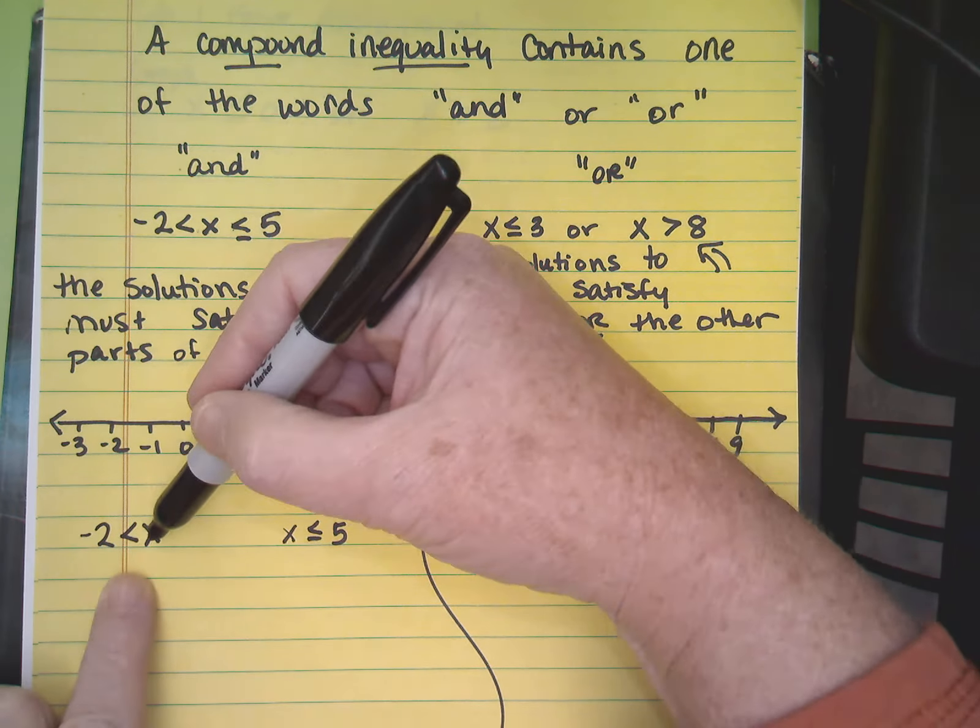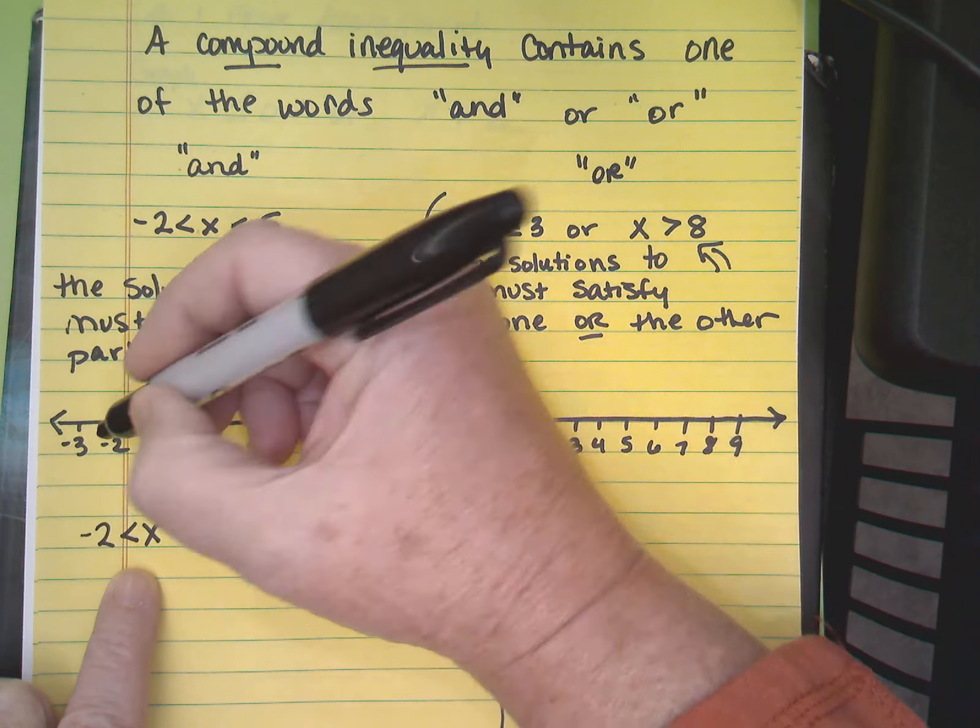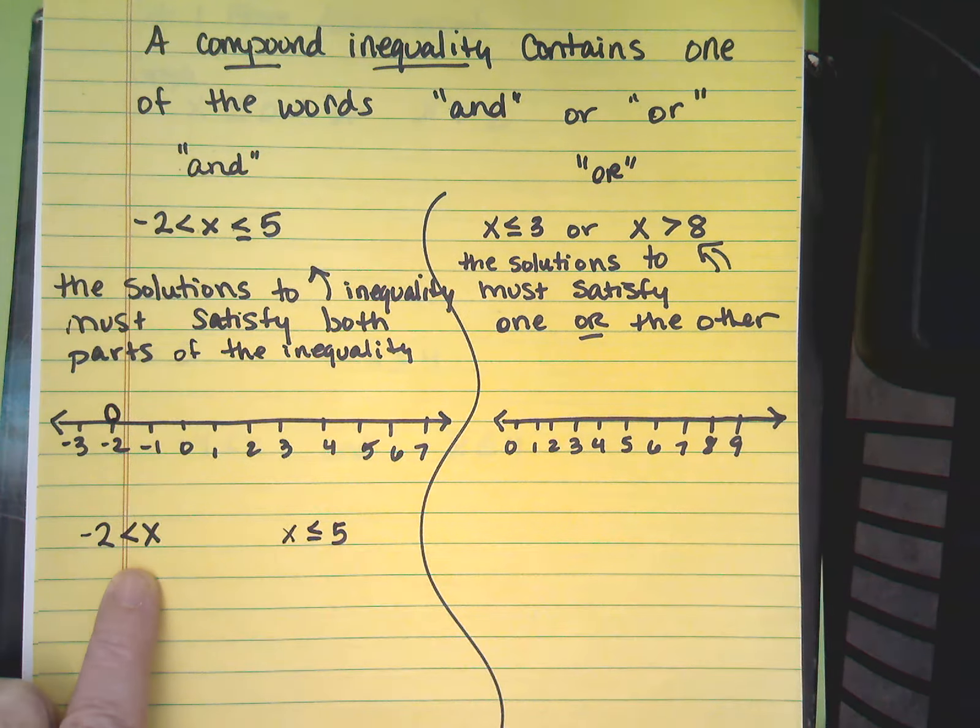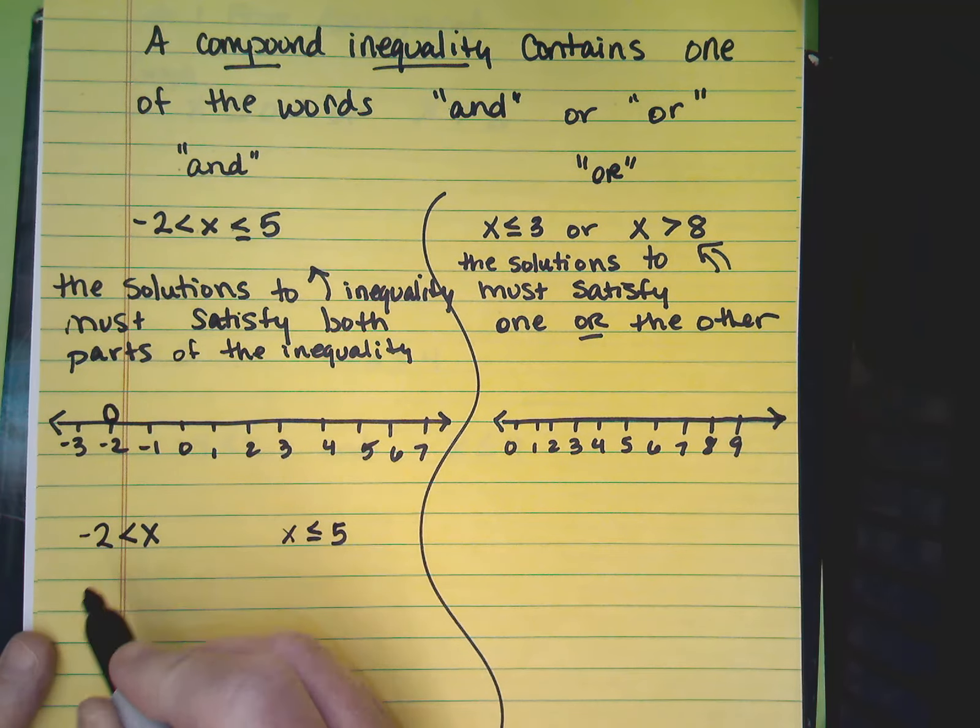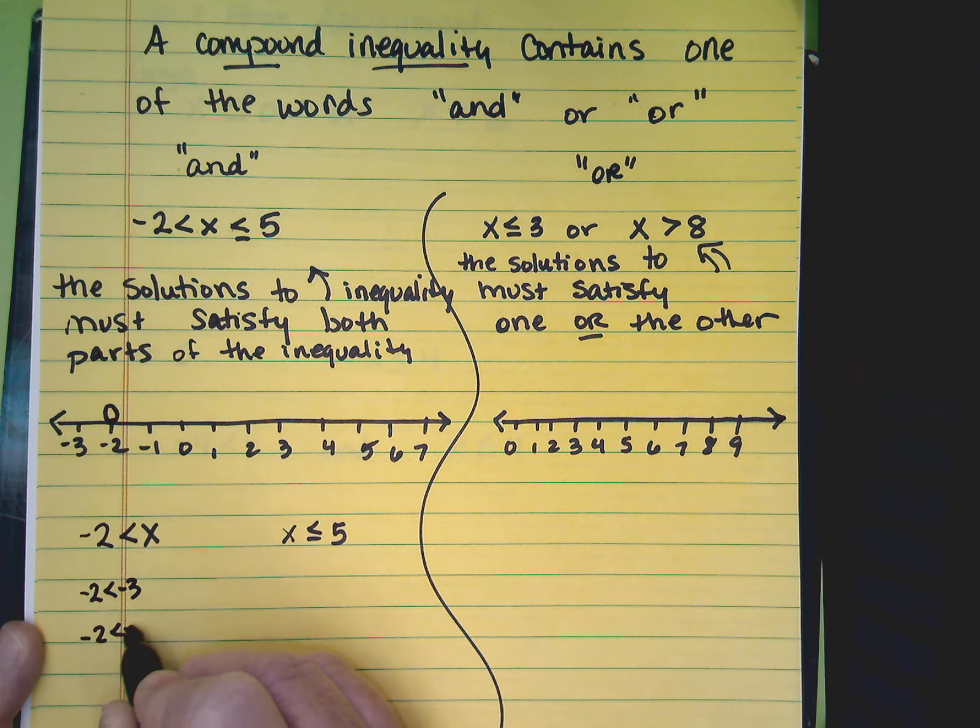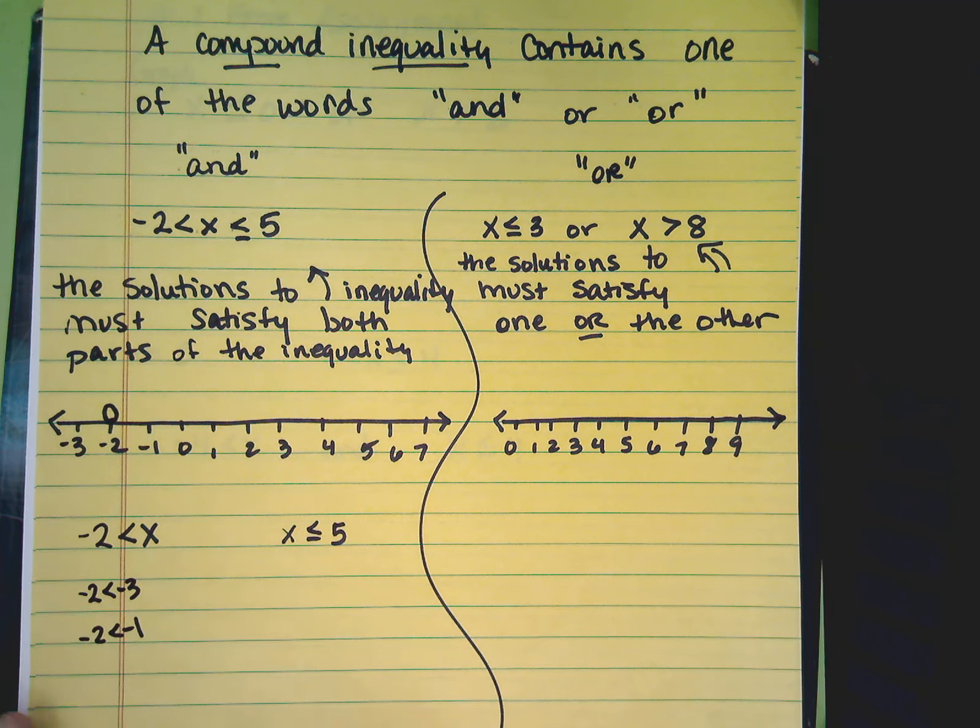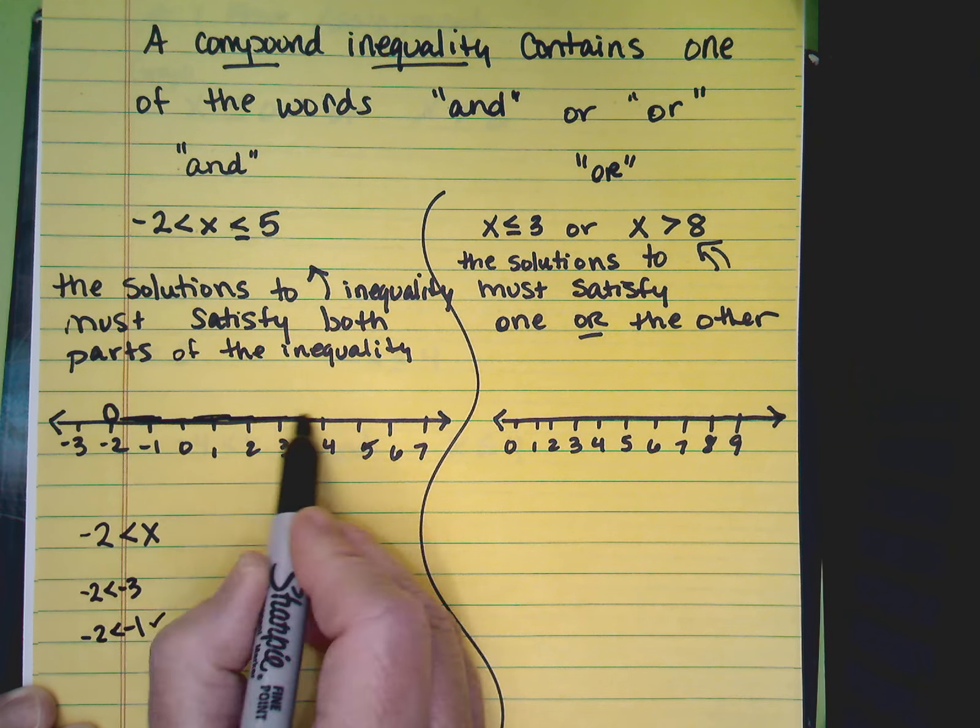Here we go. I'm going to focus on this one. So at negative 2, what kind of circle do I need? I need an open circle. And which numbers make this inequality true? Is negative 2 less than negative 3, or is negative 2 less than negative 1? The one that makes it true.